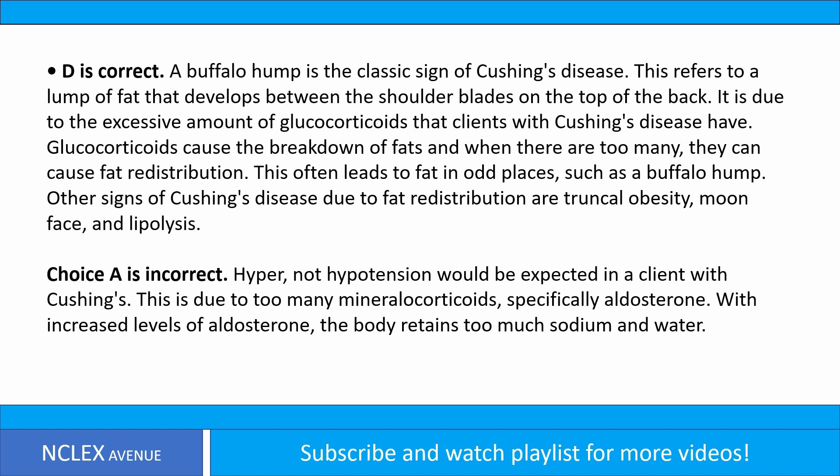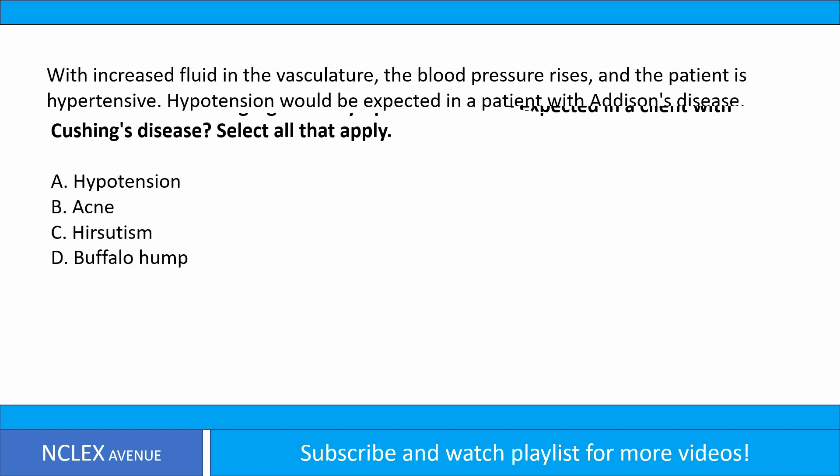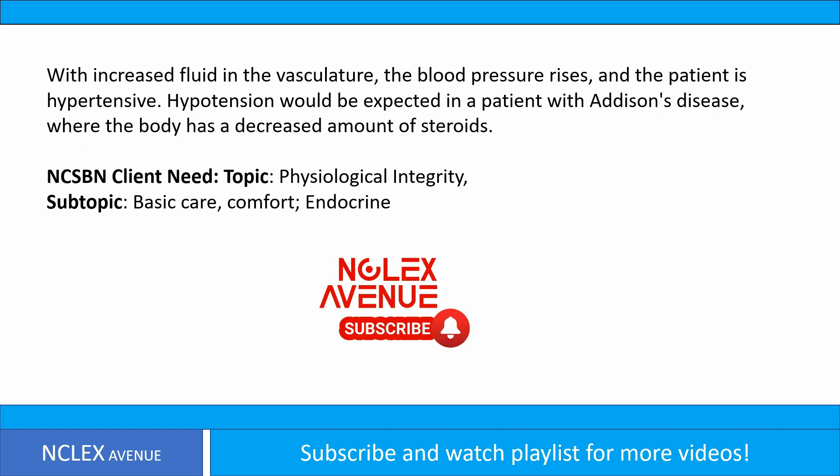Choice A is incorrect. Hypertension, not hypotension, would be expected in a client with Cushing's. This is due to too many mineralocorticoids, specifically aldosterone. With increased levels of aldosterone, the body retains too much sodium and water. With increased fluid in the vasculature, the blood pressure rises and the patient is hypertensive.